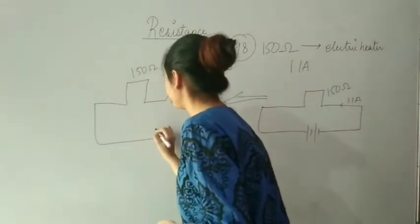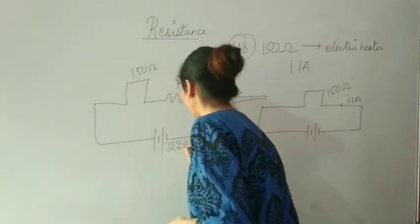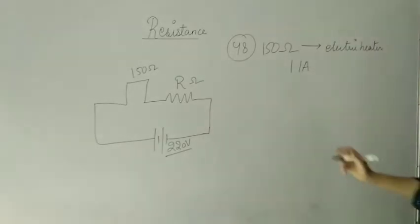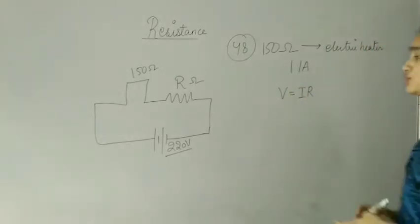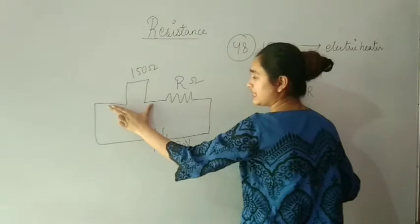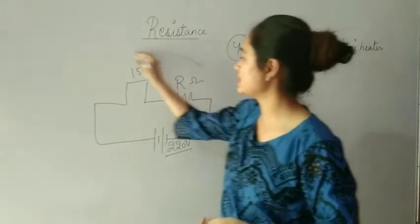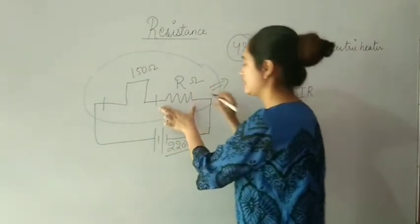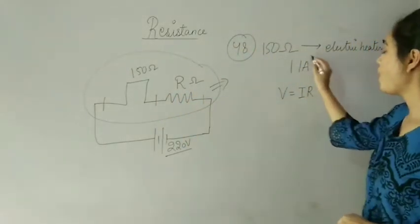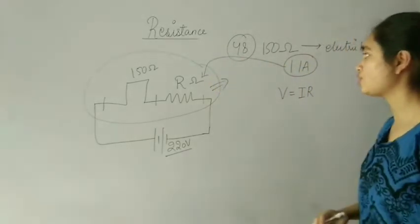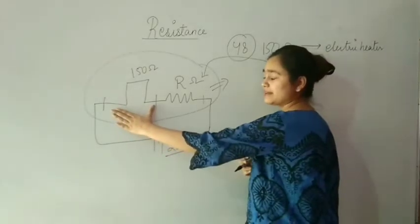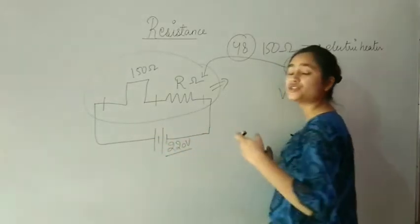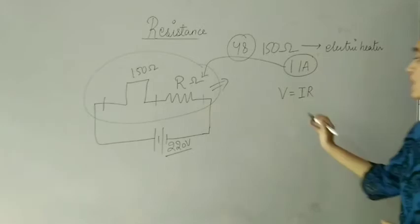So that it may be operated at 220 volt mains. We know that V is equal to IR — this is Ohm's law. The total voltage is 220 volt. If we add these two voltages, they will equal 220 volt. The potential difference across each is different, but total is 220V, and 1.1 ampere current flows through the whole circuit since both are in series.